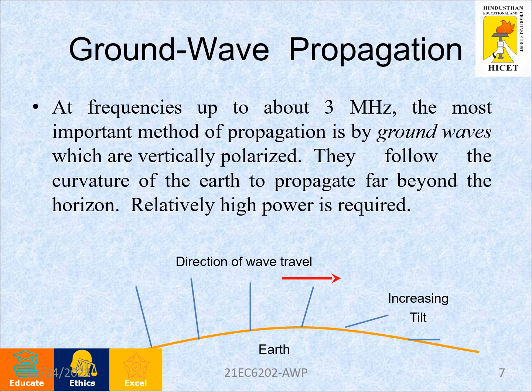In ground wave propagation, the frequency range is up to 3 MHz. The most important method of propagation is by ground wave, which uses vertically polarized waves. They follow the curvature of the earth to propagate beyond the horizon. Relatively high power is required to travel the signals from the transmitter to the receiver.